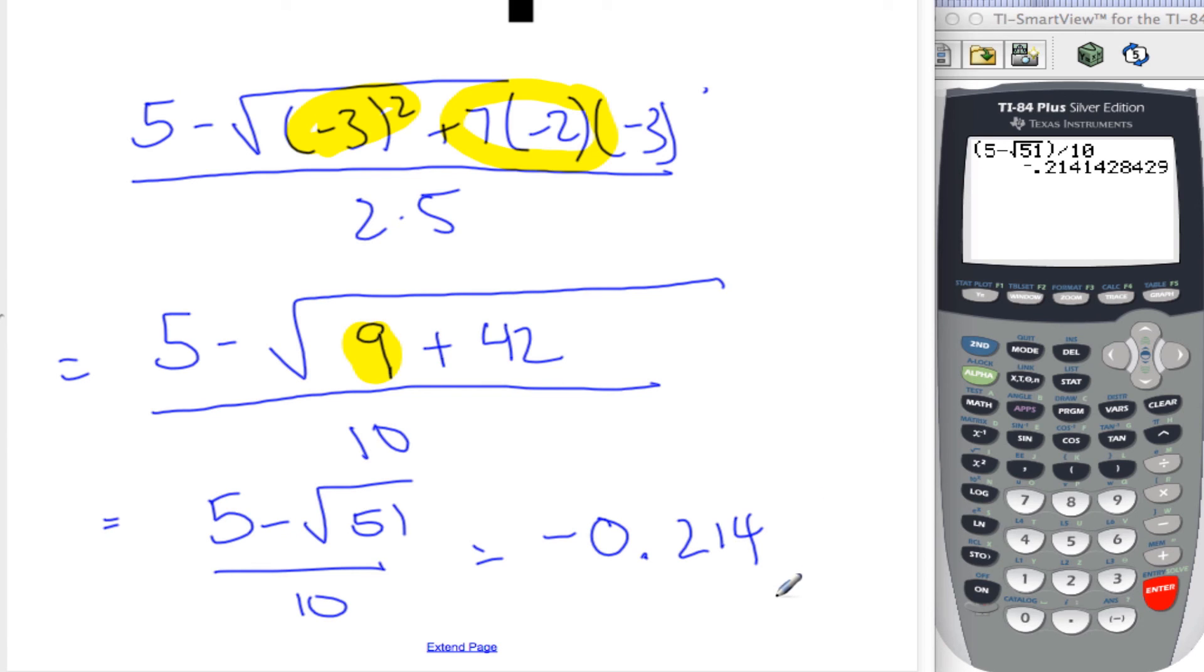The significant figures, the first one that's not a 0 from the left. So we start counting with the 2. 1, 2, 3. Yep, 1, 2, 3. 3 sig figs. Great. Thank you.